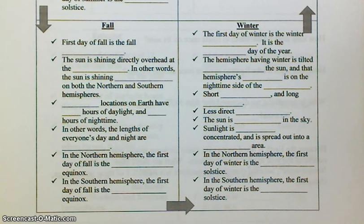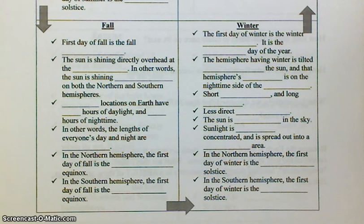After fall comes the season of winter, and winter is basically the opposite of summer. The first day of winter is the winter solstice. It is the shortest day of the year. The hemisphere having winter is tilted away from the sun, and that hemisphere's pole is on the nighttime side of the terminator. During winter, we have short days and long nights.